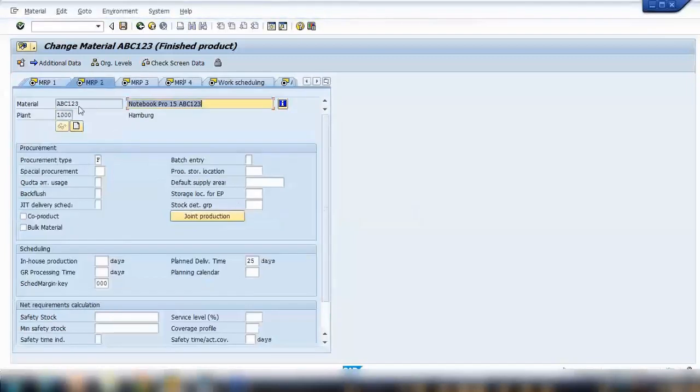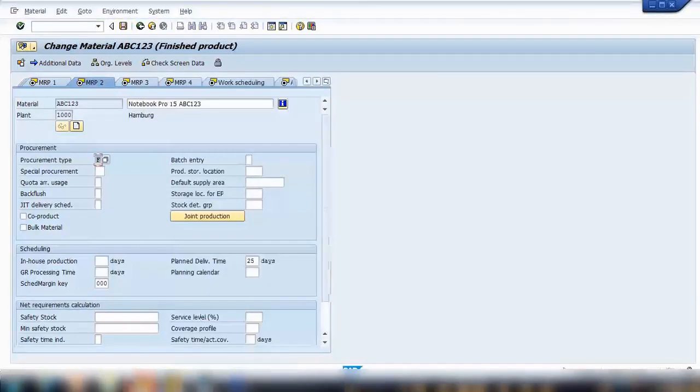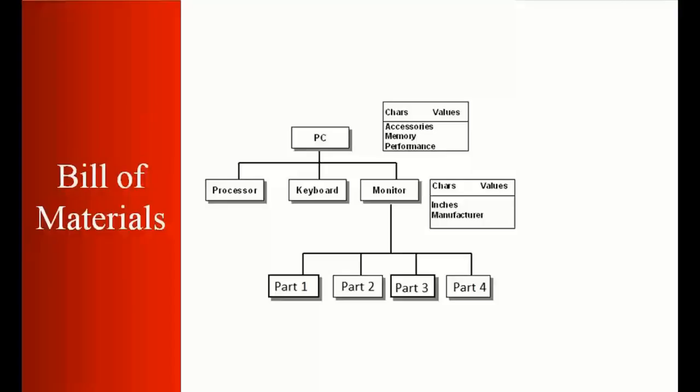Now if you go to MRP1 or 2 tabs, here under MRP2 tab, you can see procurement type is F. If you open that, you can see F stands for external procurement, procurement from the external vendor. E stands for in-house, that means within the company we will be manufacturing it in the production. And X means can be both. Sometimes it can be both, you use either external or in-house. So here you can see, as I said, it can be in-house, it can be external.